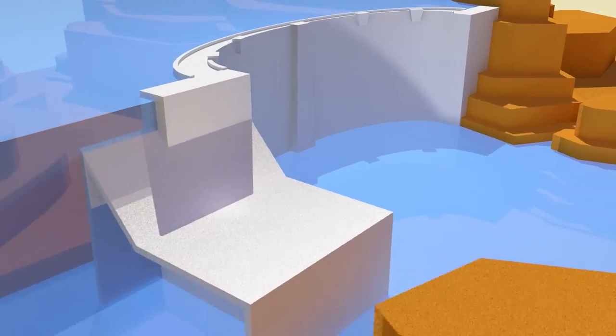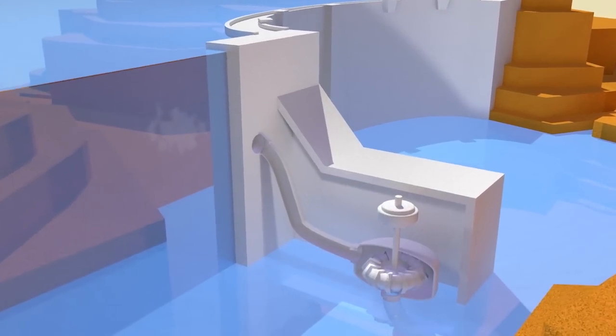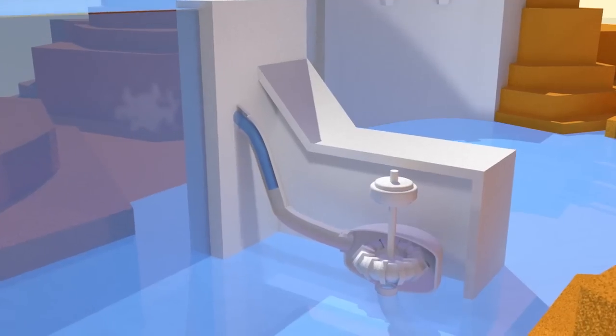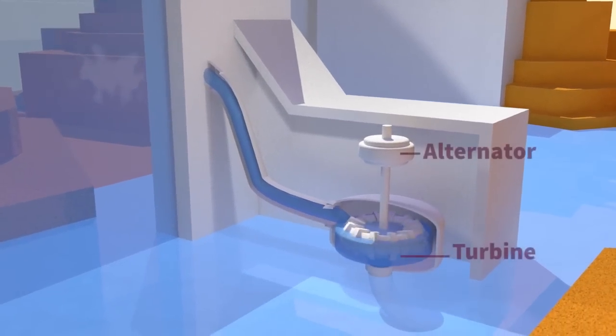Valves are opened, water passes into the penstocks. Several hundreds of meters below, a pressurized jet of water powers the turbine, which is connected to an alternator.